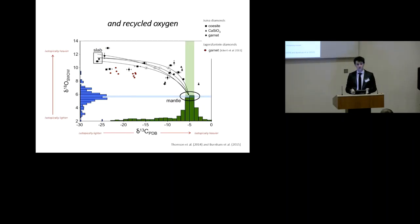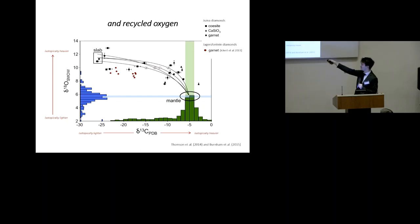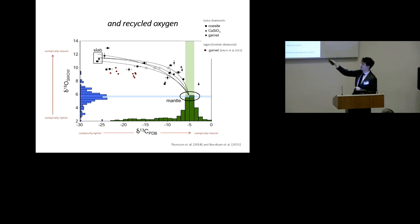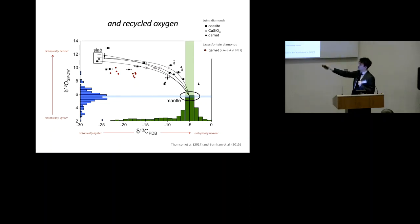Looking at the oxygen isotopic composition of the inclusions themselves - silicate minerals containing oxygen - the blue histogram shows the oxygen isotopic composition of mantle peridotitic xenoliths from cratonic environments. The diamonds are heavier isotopically in oxygen than the average cratonic composition, as well as lighter in carbon. They sit in a unique quadrant, different from the average mantle, and it happens that hydraulically altering the oceanic floor would make it heavier in oxygen - tying in with the story of altered oceanic crust subducting into the earth.